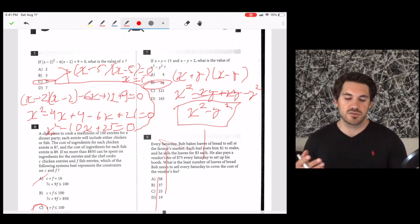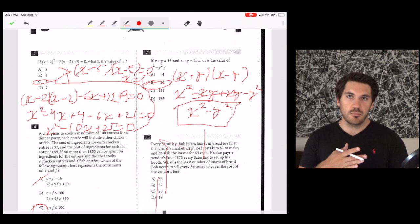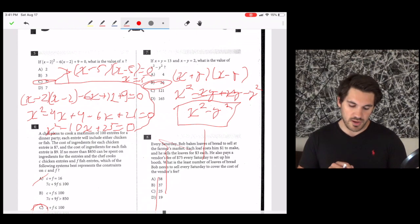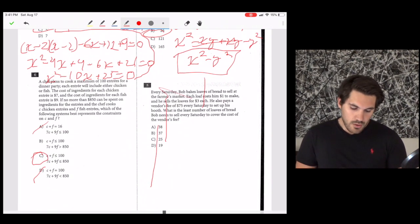Otherwise, solve it like a system of equations. You can solve one variable for x, plug it into the other equation, get the y variable, then you'll have your x squared and your y squared, and plug them into x squared minus y squared.